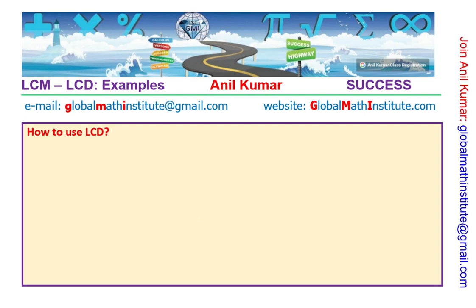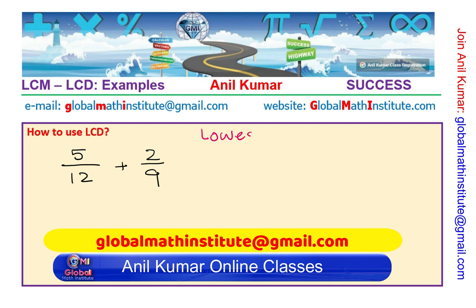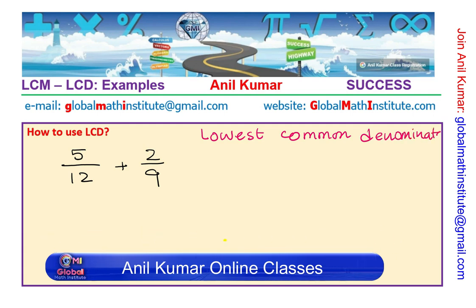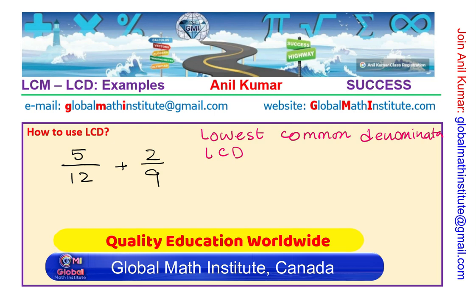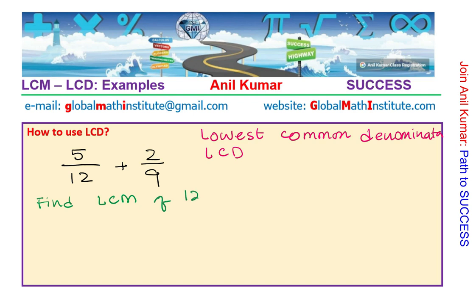Now let's see how we use this LCM and when it becomes LCD. Let's try to add fractions: 5 over 12 plus 2 over 9. The denominators are different, so we need the Lowest Common Denominator, or LCD. The lowest common denominator is going to be the lowest common multiple between 12 and 9.